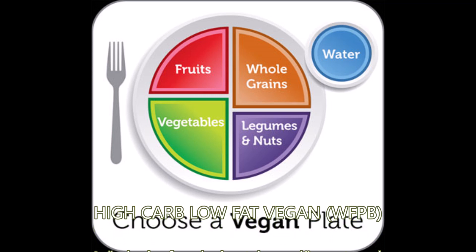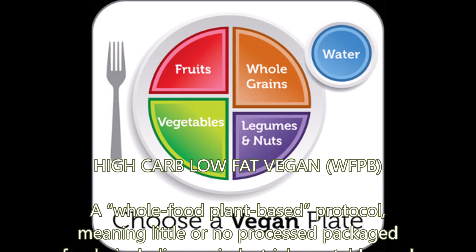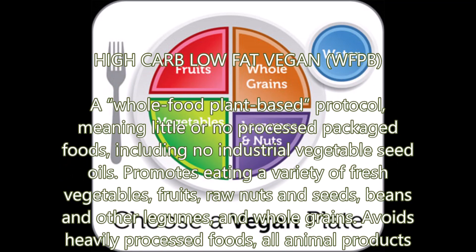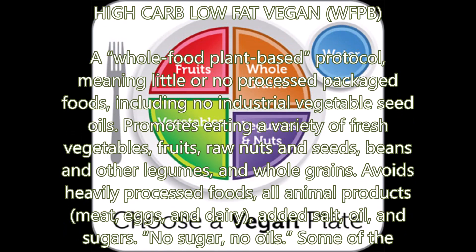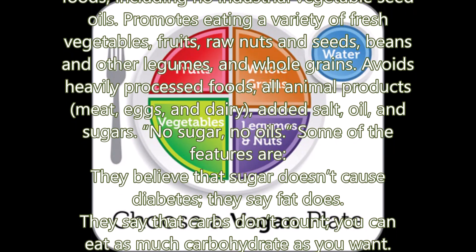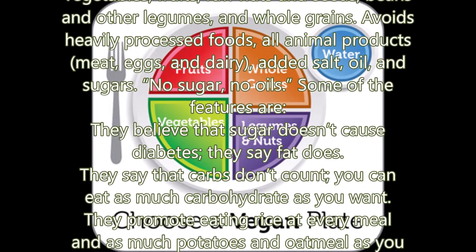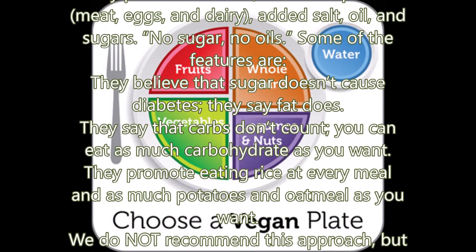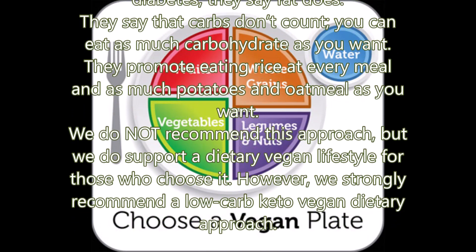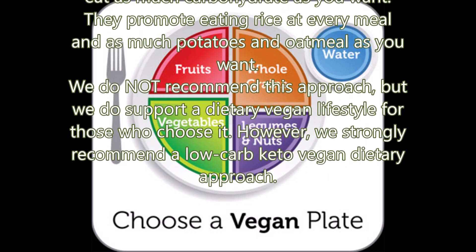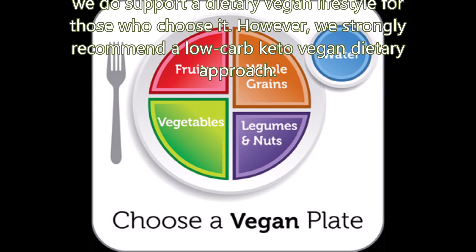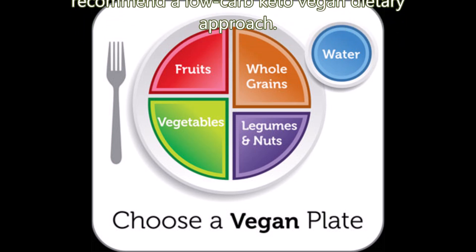High-Carb Low-Fat Vegan (WFPB): A whole-food plant-based protocol meaning little or no processed packaged foods, including no industrial vegetable seed oils. Promotes eating a variety of fresh vegetables, fruits, raw nuts and seeds, beans and other legumes, and whole grains. Avoids heavily processed foods, all animal products, added salt, oil, and sugars. Some features: they believe sugar doesn't cause diabetes — they say fat does; carbs don't count and you can eat as many carbohydrates as you want; they promote eating rice at every meal and as much potatoes and oatmeal as you want. We do not recommend this approach, but we do support a dietary vegan lifestyle for those who choose it. However, we strongly recommend a low-carb keto vegan dietary approach.